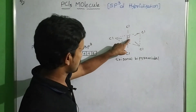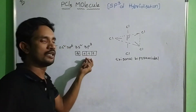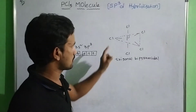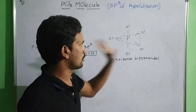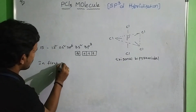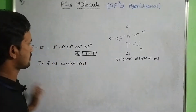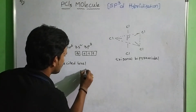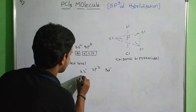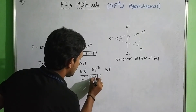But in the structure, phosphorus forms 5 sigma bonds. But in the ground state, it has only 3 unpaired electrons. It must have 5 unpaired electrons because of 5 bonds. In the first excited level, the configuration becomes 3s1, 3p3, 3d1 — one s electron is jumped into the d orbital.